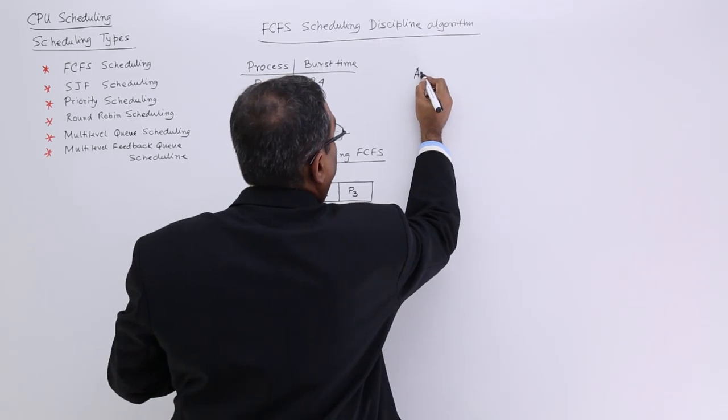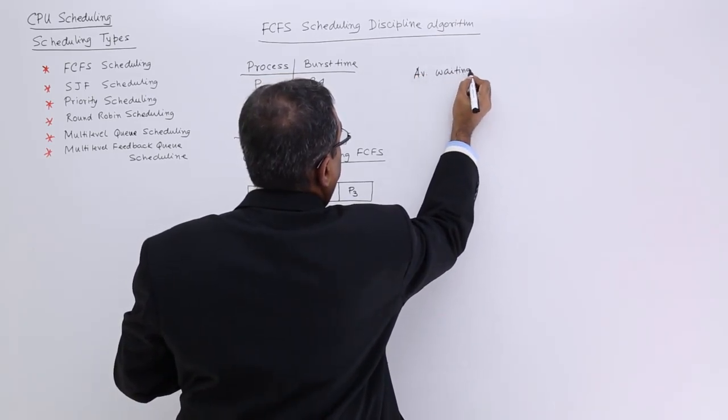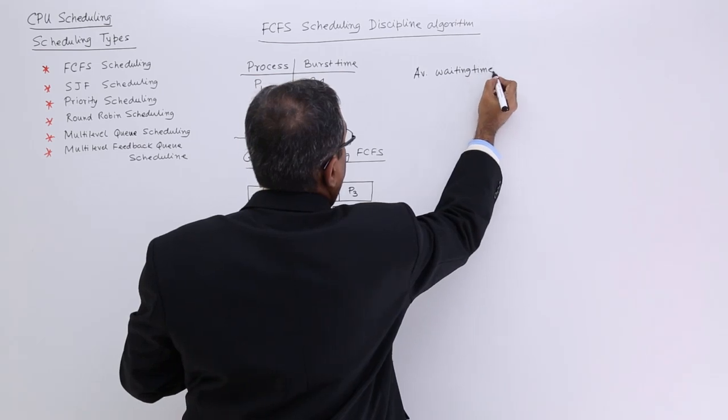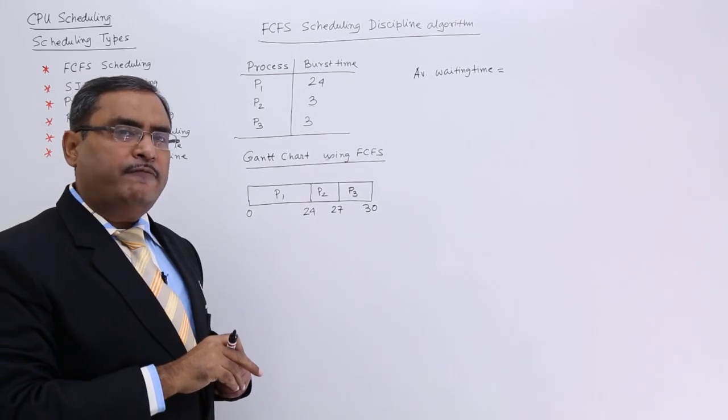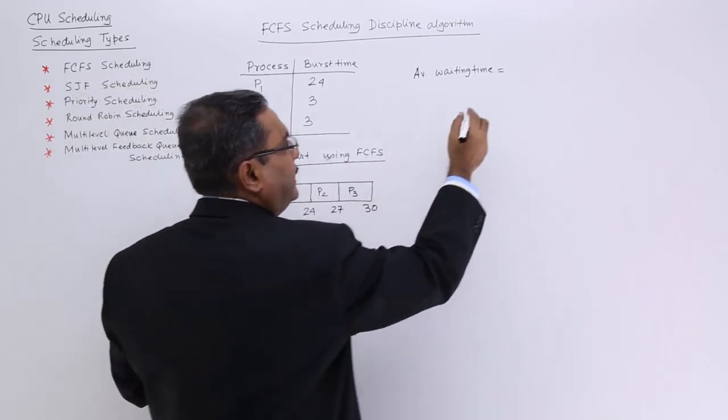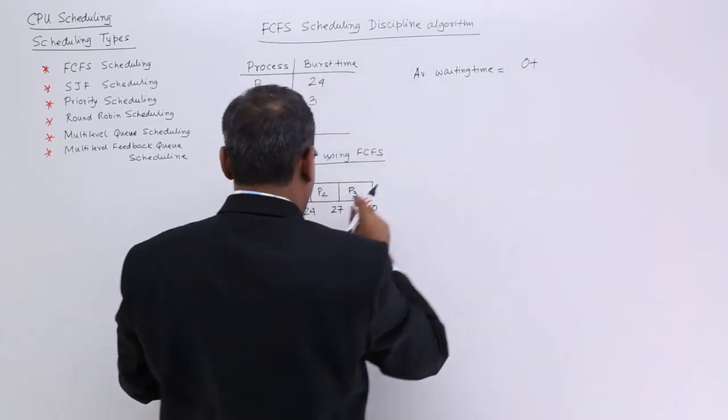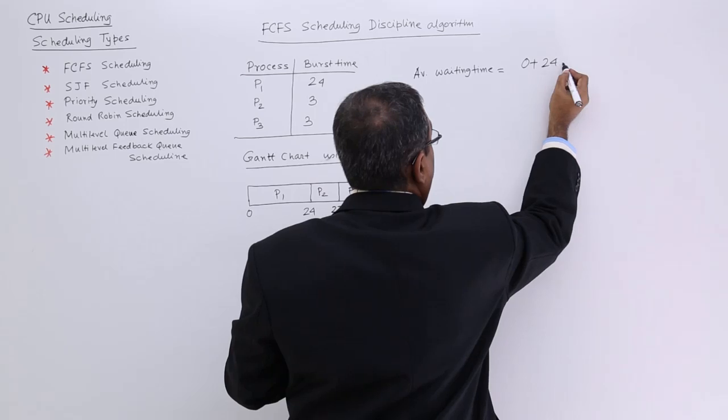Now we are going to calculate the average waiting time. How to calculate it? For P1, there is no waiting time. For P2, the waiting time is 24.